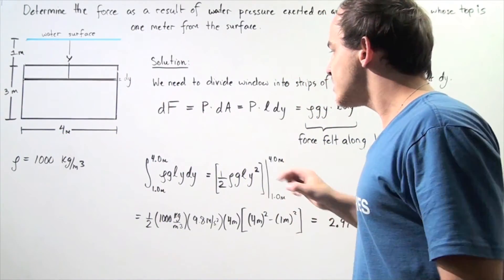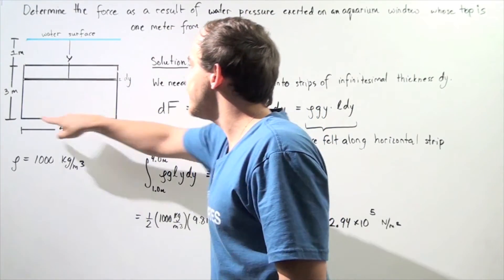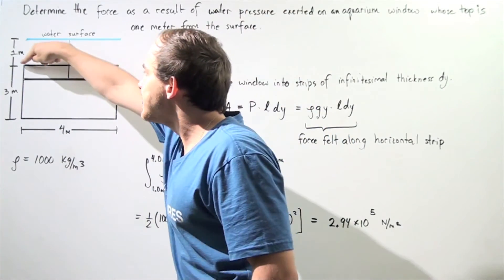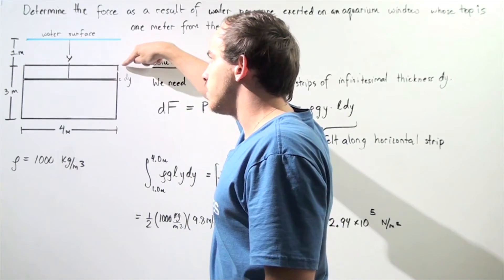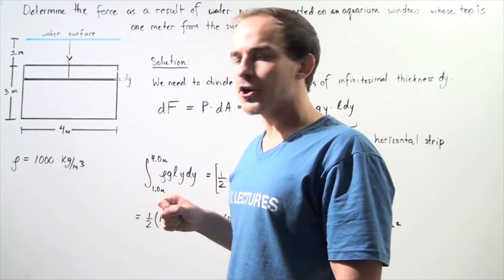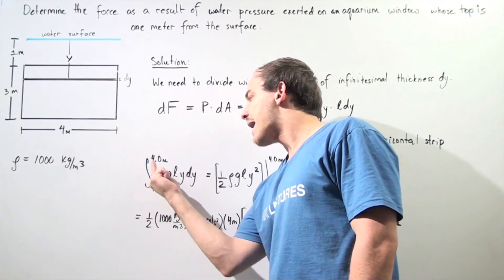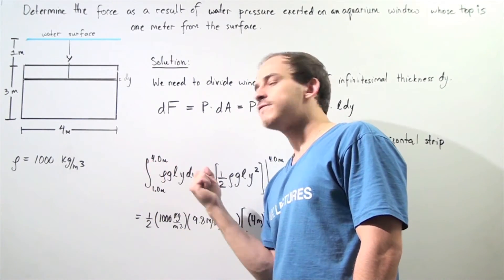So the way we do that is we simply integrate beginning at this position and ending at this position. So this position is 1 meter below the surface and this position is 4 meters below the surface. So that means our initial point is 1 meter and our final point is 4 meters.